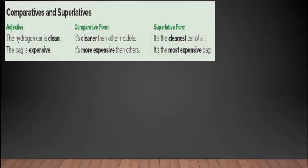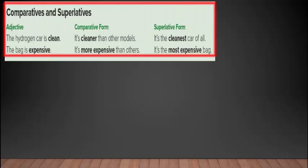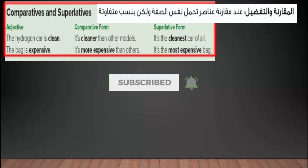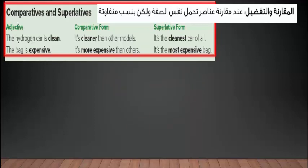Comparatives and Superlatives — صيغة المقارنة وصيغة التفضيل. نستخدمها عند مقارنة عناصر تحمل نفس الصفة ولكن بنسب متفاوتة. في المثال الأول الصفة بصيغتها الأساسية: The hydrogen car is clean / The bag is expensive. بصيغة المقارنة: It is cleaner than other models / It is more expensive than others.